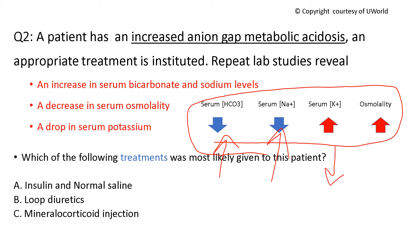However, you still need to give potassium because remember, total body potassium is depleted. And for osmolality, if you give insulin it's going to drive glucose inside cells, so glucose is no longer contributing to osmolality as much, and osmolality decreases. So the only treatment that can do all this is insulin and normal saline.